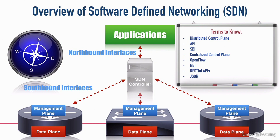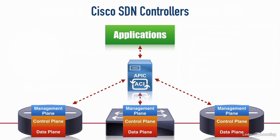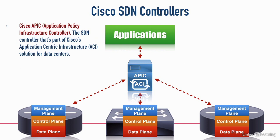Let's take a look at a couple of the more popular SDN controllers that Cisco has. First, we have the Cisco APIC, which stands for Application Policy Infrastructure Controller. This is typically found in a data center — it's part of Cisco's ACI, or Application Centric Infrastructure, and we typically see that in a data center.